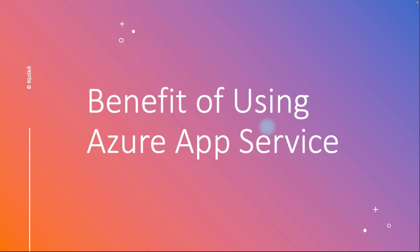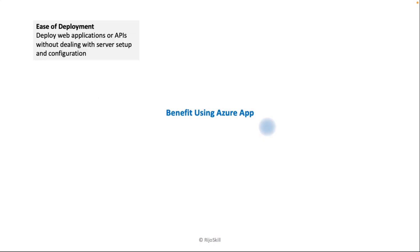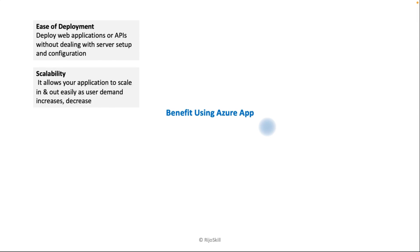What are the benefits of using Azure App Service? The first benefit is ease of deployment — you can deploy web applications without dealing with server setup, since you only focus on your web application and API. Next is scalability — it allows your application to scale in and out easily when traffic changes.